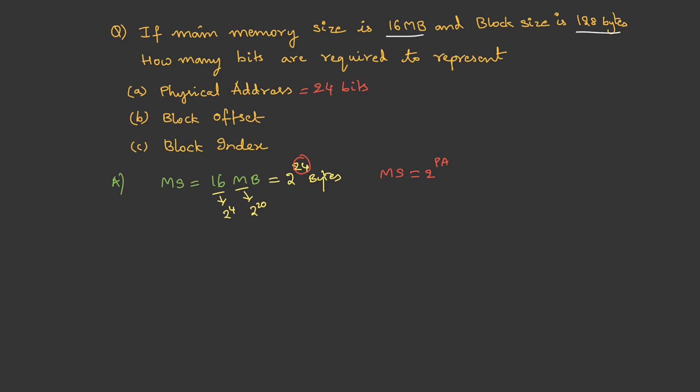Next is given block size is 128 bytes. So 128 is 2 power 7, so 2 power 7 bytes. And we know that block size is 2 power block offset. So we need 7 bits for block offset.